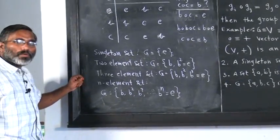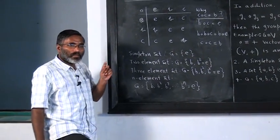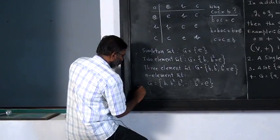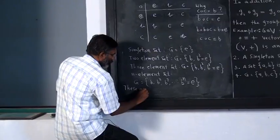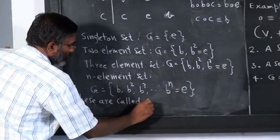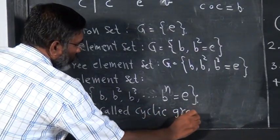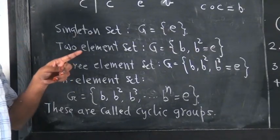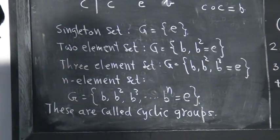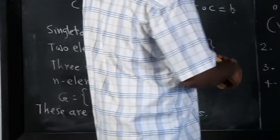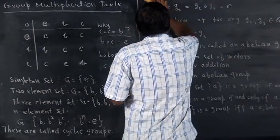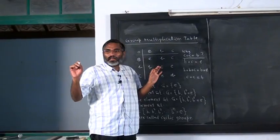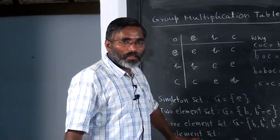If you have a group whose elements are generated by a single element, we call such groups cyclic groups. These are called cyclic groups — it is like a cycle: B, B², B³, etc., and B^n is identity. You are convinced that if you have any n-element set, you can always construct a cyclic group in this fashion.